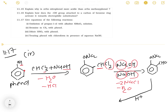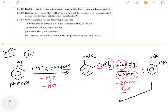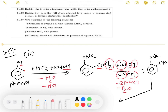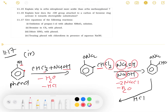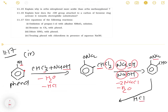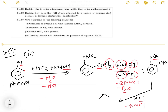After adding H+ and the subsequent steps, we obtain the aldehyde product. The final product is salicylaldehyde, also known as 2-hydroxybenzaldehyde.